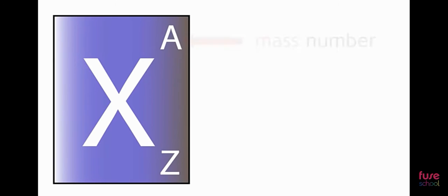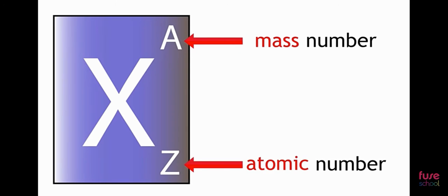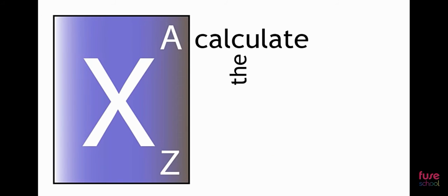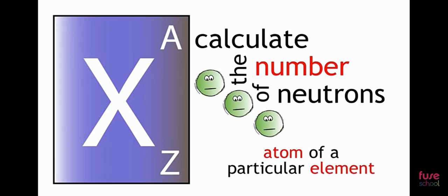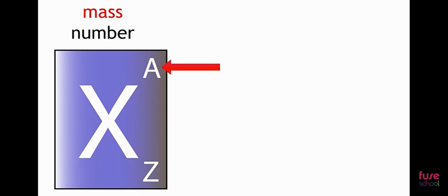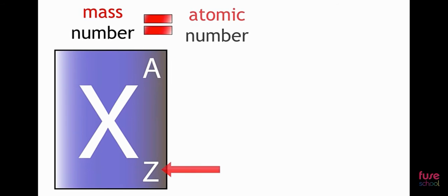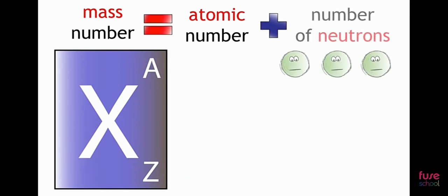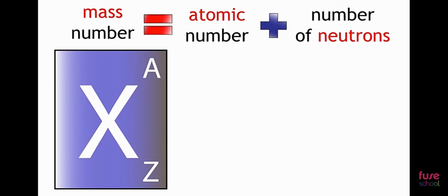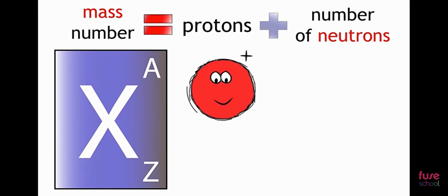So if we know the mass number of an element and we know the atomic number, we can calculate the number of neutrons in an atom of a particular element. The mass number equals the atomic number plus the number of neutrons. The atomic number is just the number of protons in an atom. Therefore, mass number equals protons plus neutrons.